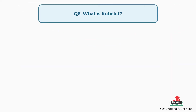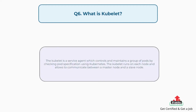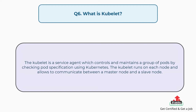Question number six: What is Kubelet? The Kubelet is a service agent which controls and maintains a group of pods by checking pod specification using Kubernetes. The Kubelet runs on each node and allows communication between a master node and a slave node.